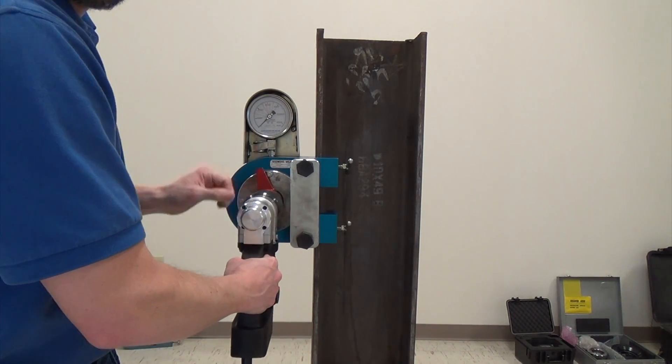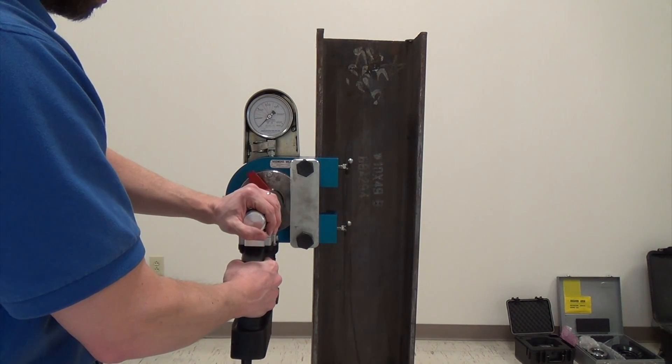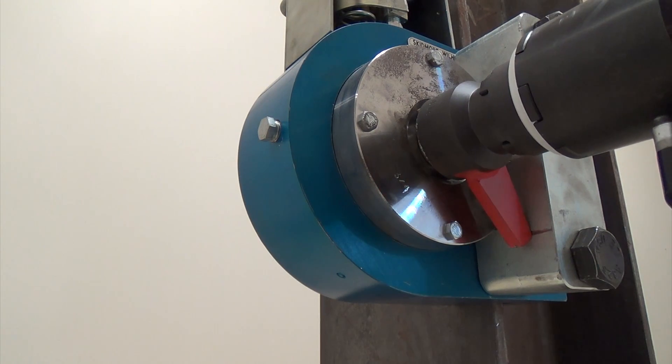Once the reaction kit has been properly added to the Skidmore, the tool can function as intended by reacting against the surface of the bar.